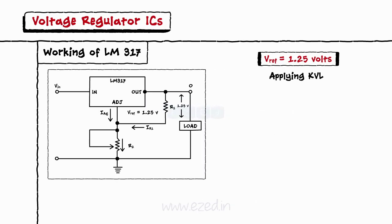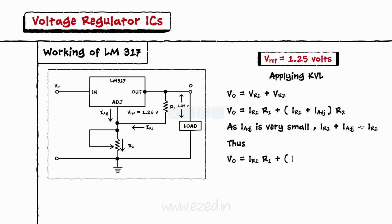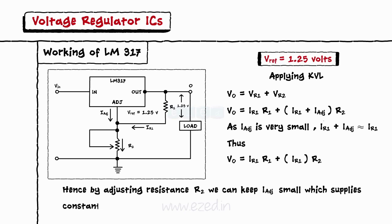Applying KVL we can write V0 equals Vr1 plus Vr2. V0 equals IR1 into R1 plus IR1 plus I adjust into R2. As I adjust is very small, IR1 plus I adjust is nearly equal to IR1. Thus, V0 equals IR1 into R1 plus IR1 into R2. Hence, by adjusting resistance R2, we can keep I adjust small which supplies a constant output irrespective of change in the input voltage.